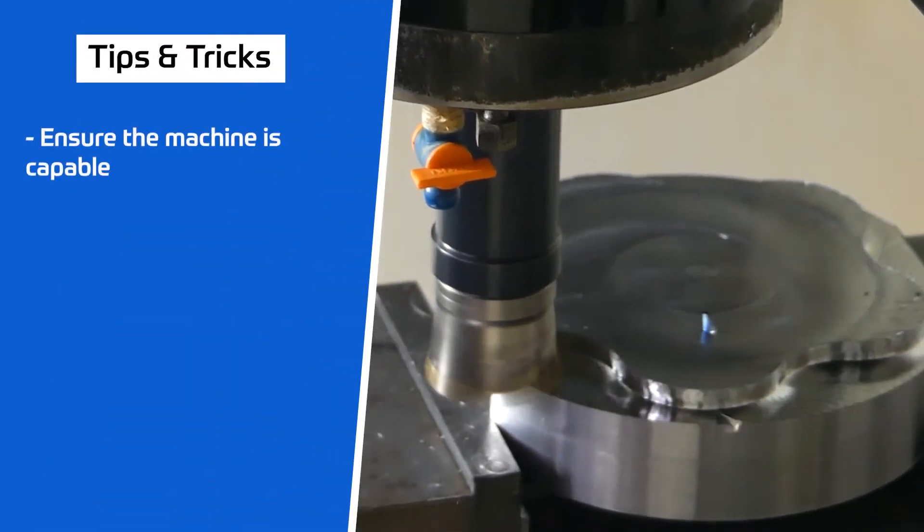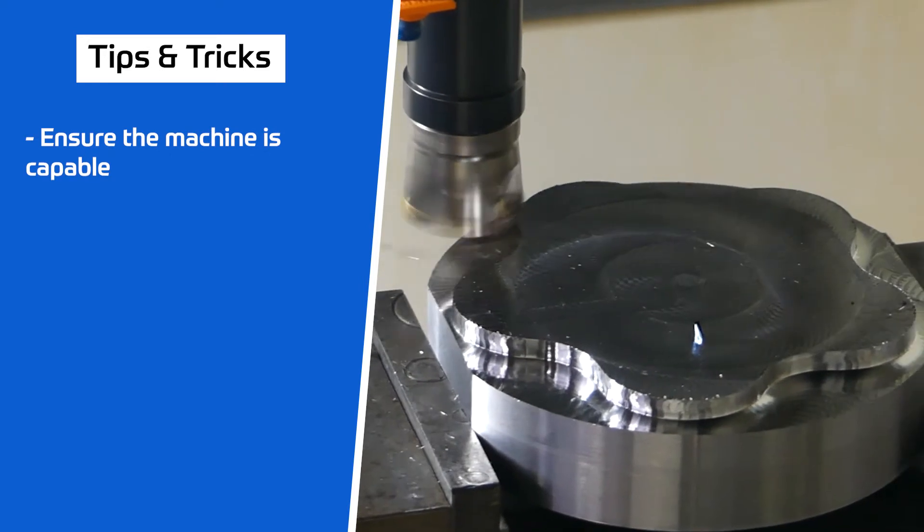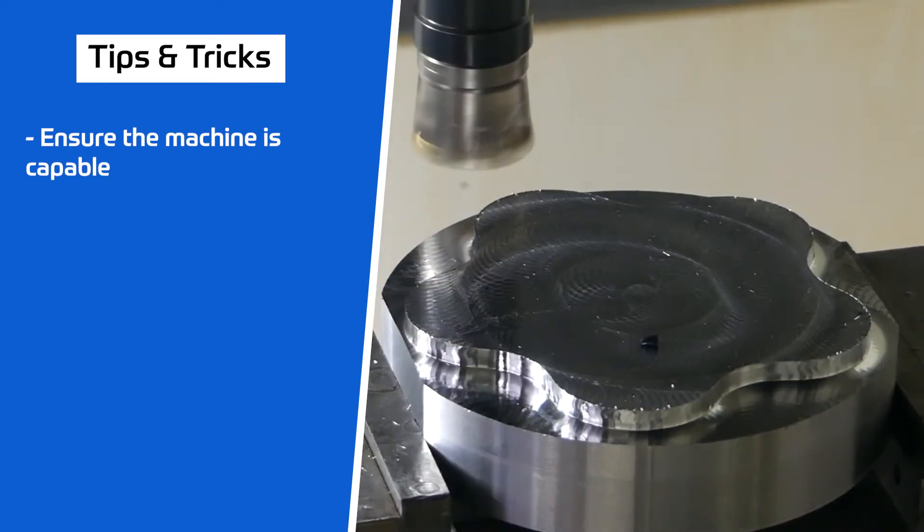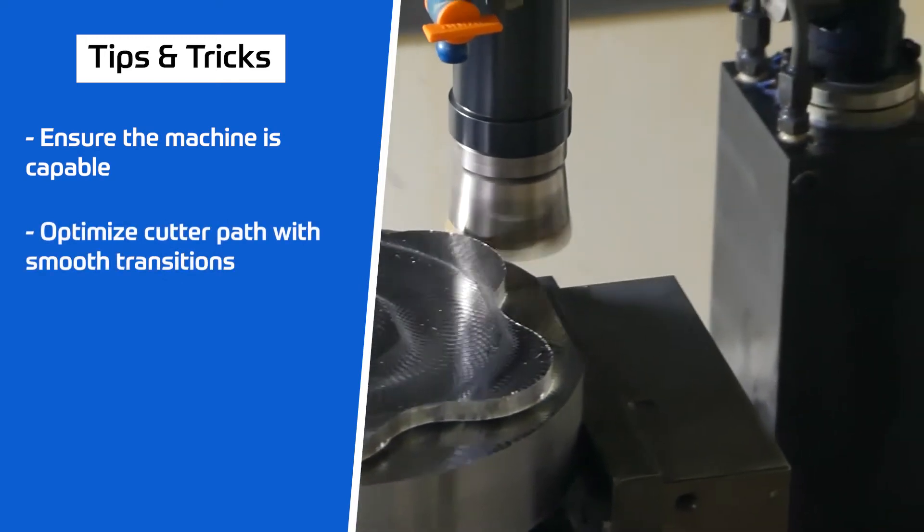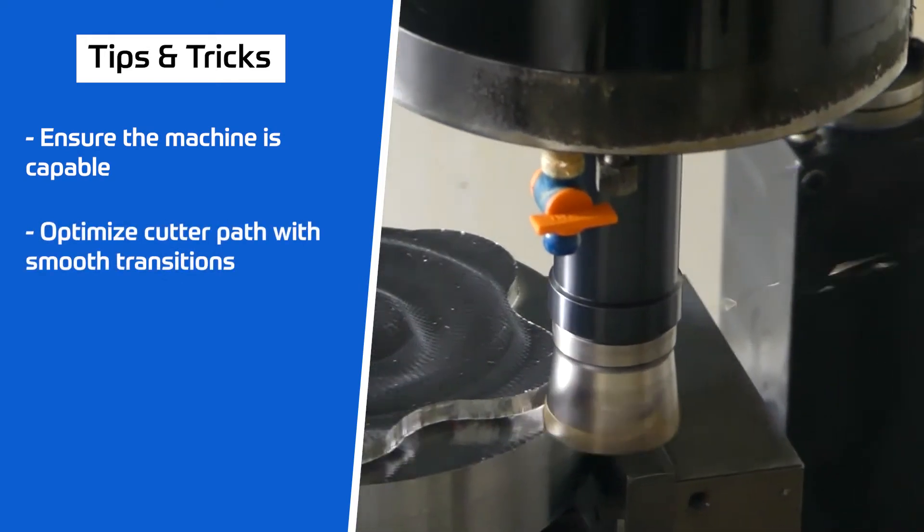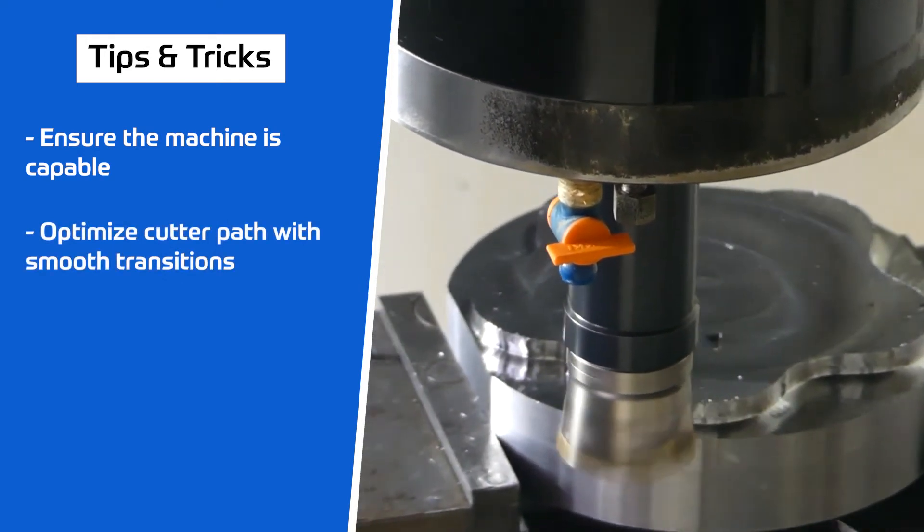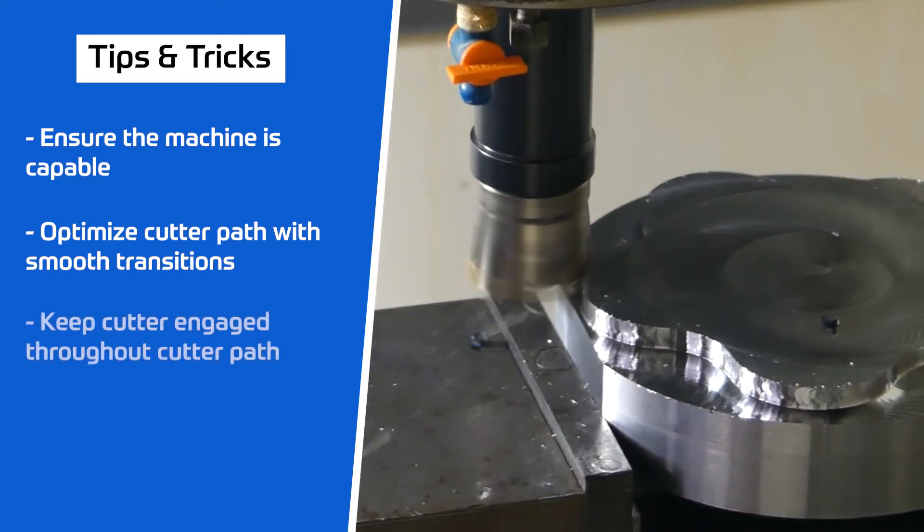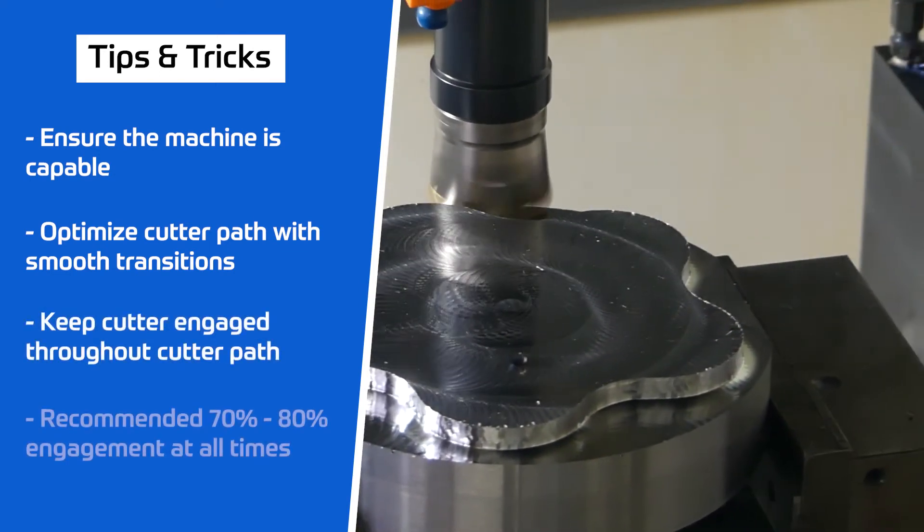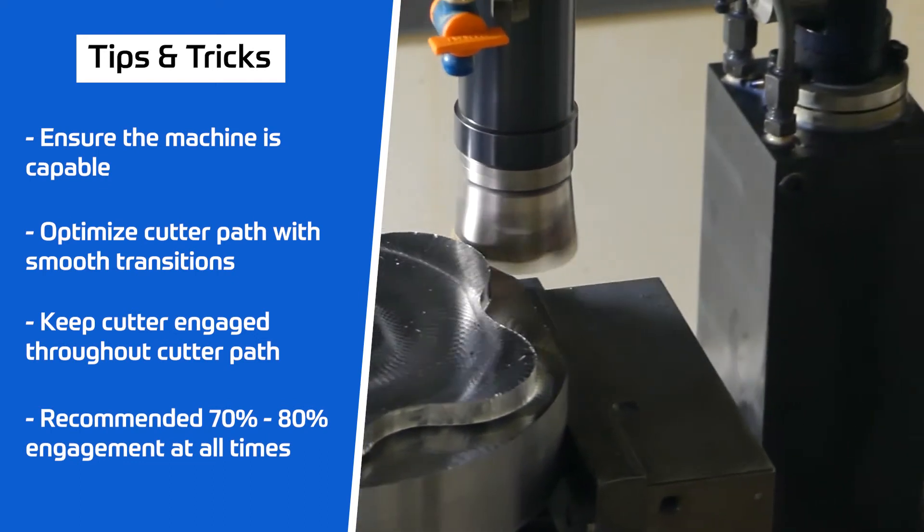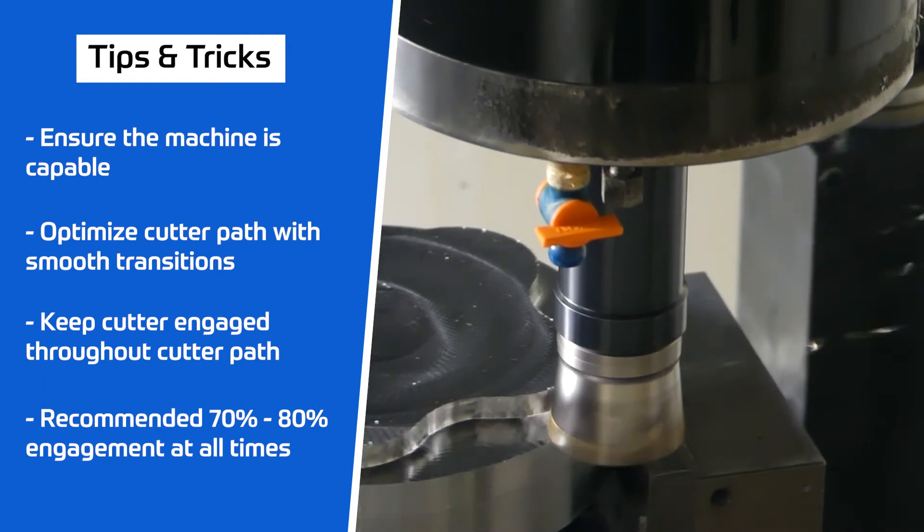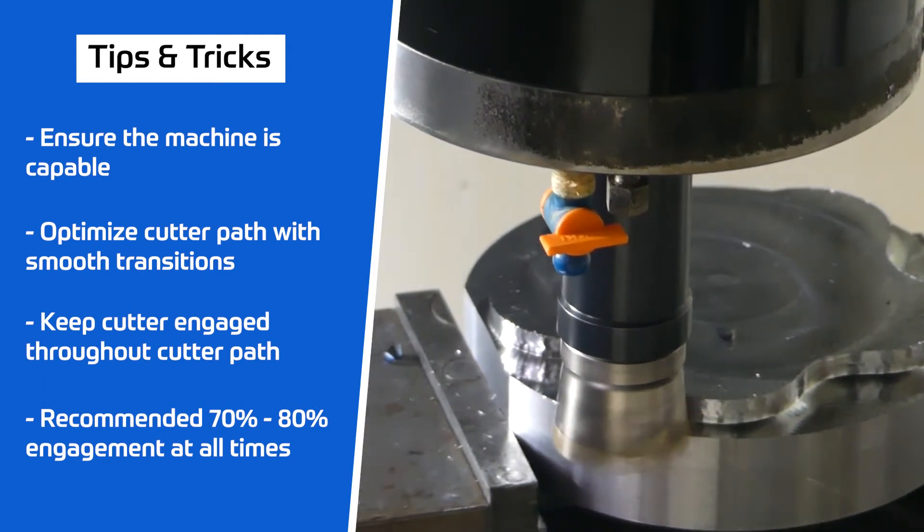High feed milling must be run on a capable machine. Machine rigidity, max feed, and control speeds need to be adequate. Optimize the cutter path with smooth transitions. Corners should have an arc 50% larger than the cutter diameter. Keep cutter engaged throughout the cutter path. Recommended 70% to 80% engagement at all times. Cutting forces are axial and less diameter engagement can increase radial forces causing vibrations.